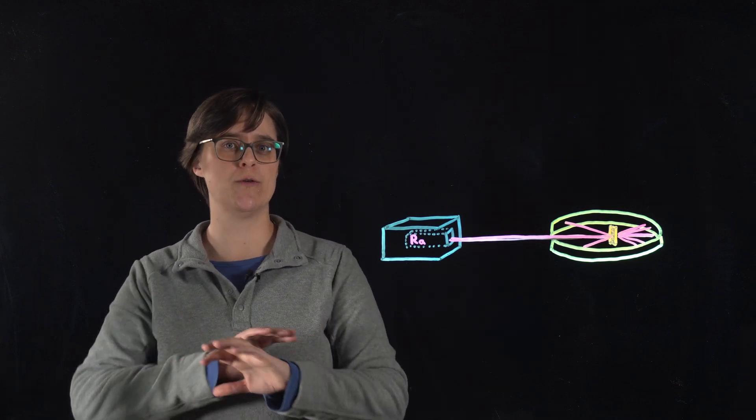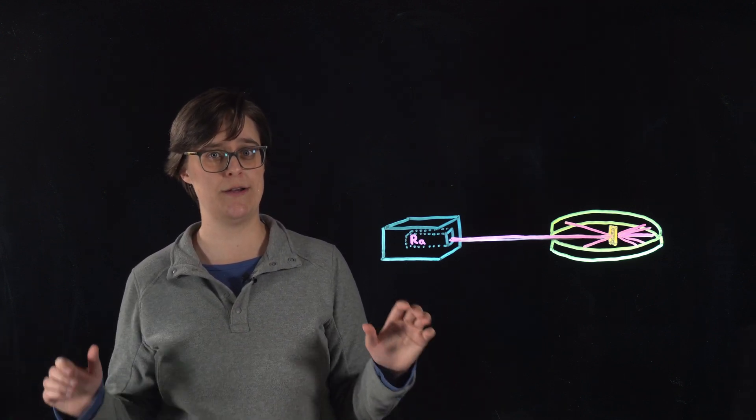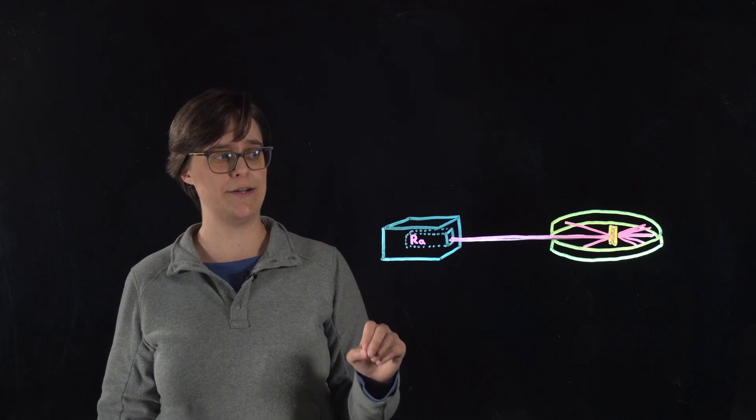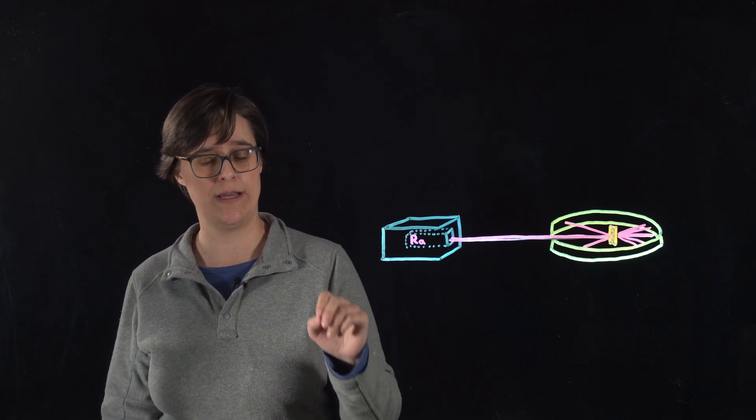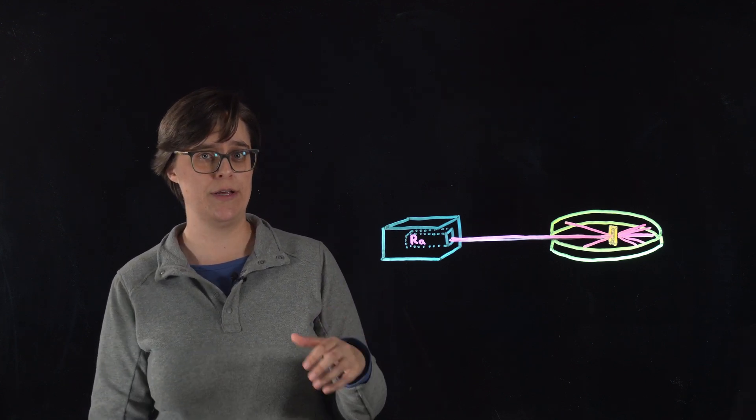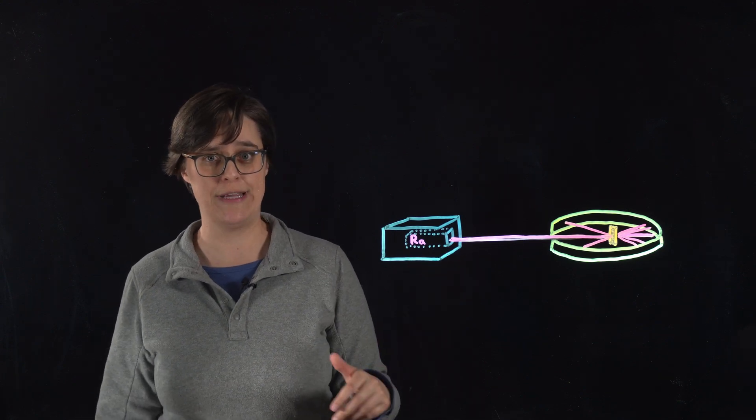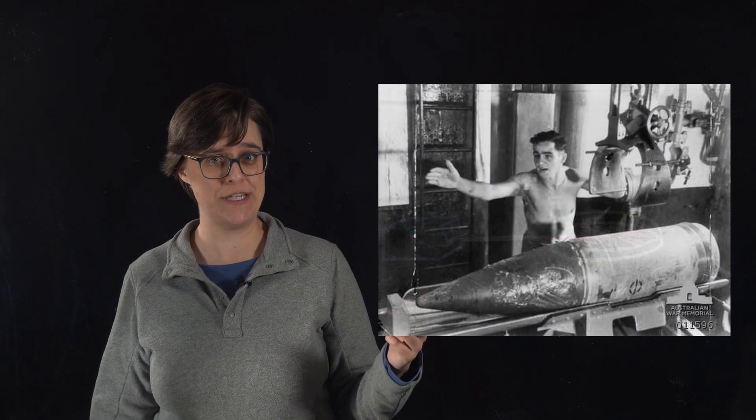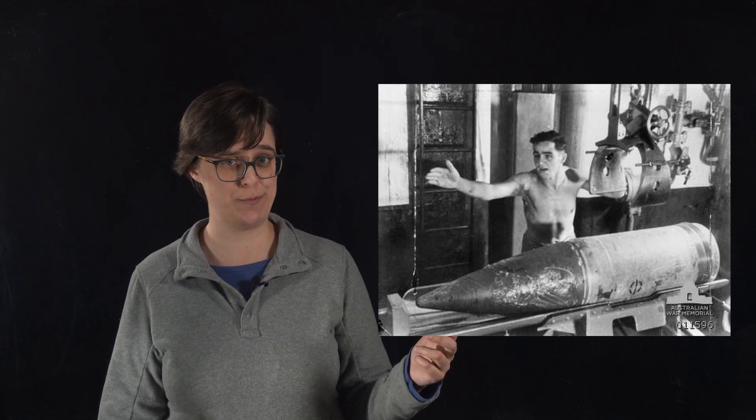Alpha particles are huge in comparison to the electron. They are each about 7,000 times more massive than the electron. So, to paraphrase Rutherford, it's as if he was shooting a 15-inch shell at a piece of tissue paper.